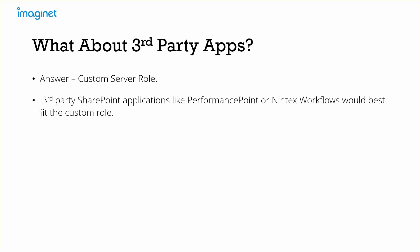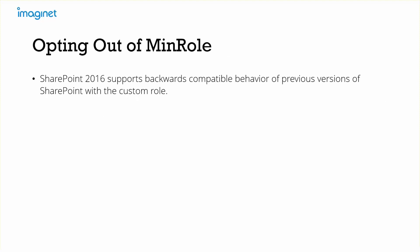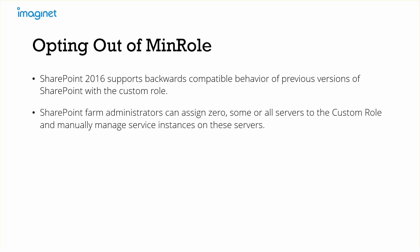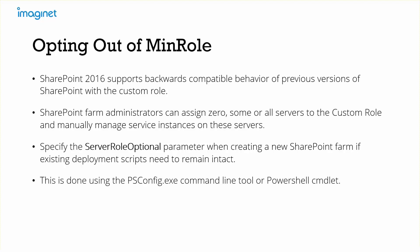What about third-party apps? The answer is the custom server role. Third-party applications may require certain prerequisites that don't align with MinRole, so the custom role may be the best fit. The custom server role is excluded from MinRole compliance checks and can run any service the administrator configures. SharePoint 2016 supports backwards-compatible behavior with the custom role. Farm admins can assign zero, some, or all servers the custom role and manage service instances on those servers. If you have an existing deployment script you don't want to update, you can specify the server role as an optional parameter using psconfig or the PowerShell cmdlet.